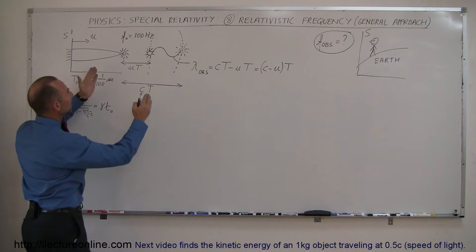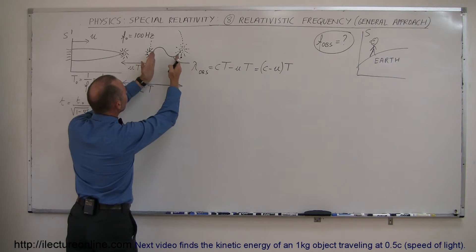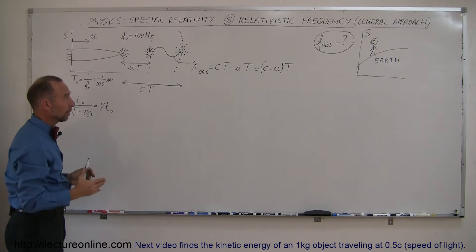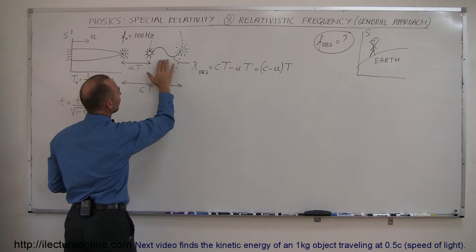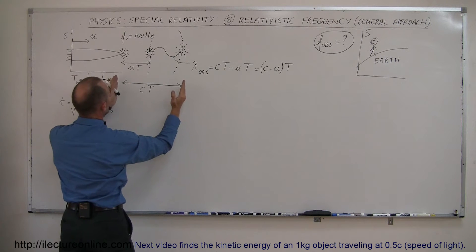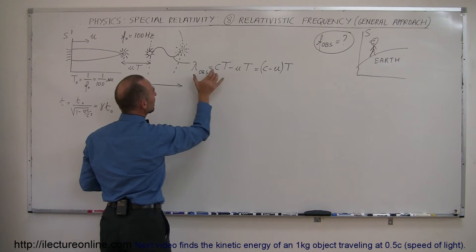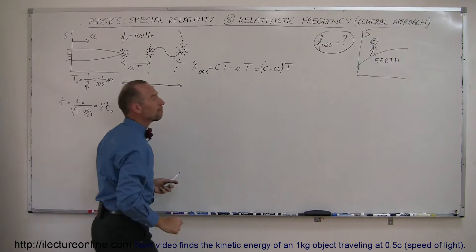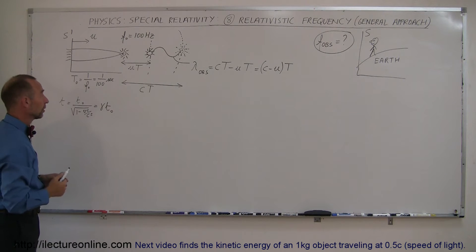That means the wavelength, which normally would have been a certain length, is going to be much shorter now — it's compressed because the spaceship is moving towards the observer, giving a Doppler shift. The observed wavelength will be C times T minus U times T, which equals C minus U times the period, where the period is as observed by the observer on Earth.